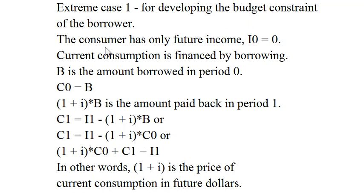The consumer has only future income so I0 equals zero. Current consumption is financed by borrowing. We're going to let B denote the amount borrowed. So B is the amount borrowed in period zero.